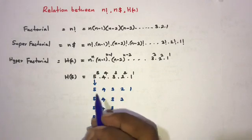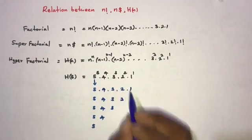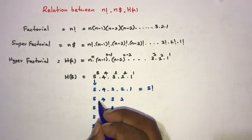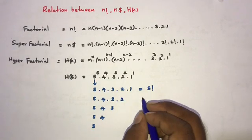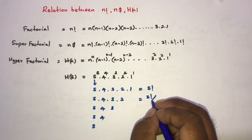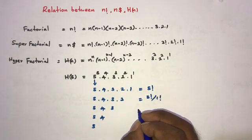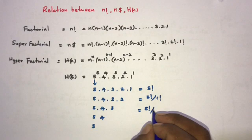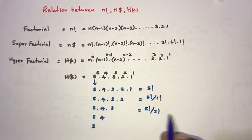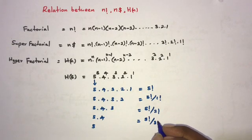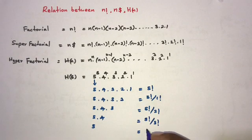We can observe that 5 times 4 times 3 times 2 times 1 equals 5 factorial. Then the remaining group 5 times 4 times 3 times 2 equals 5 factorial over 1 factorial. Similarly, 5 times 4 times 3 equals 5 factorial over 2 factorial, 5 times 4 equals 5 factorial over 3 factorial, and 5 alone equals 5 factorial over 4 factorial.